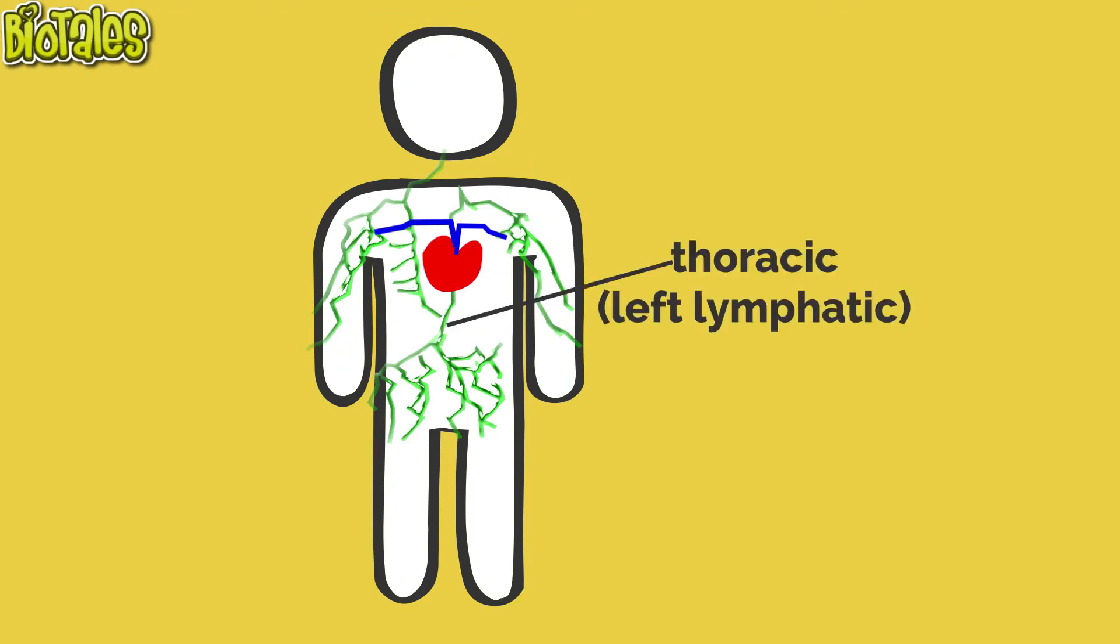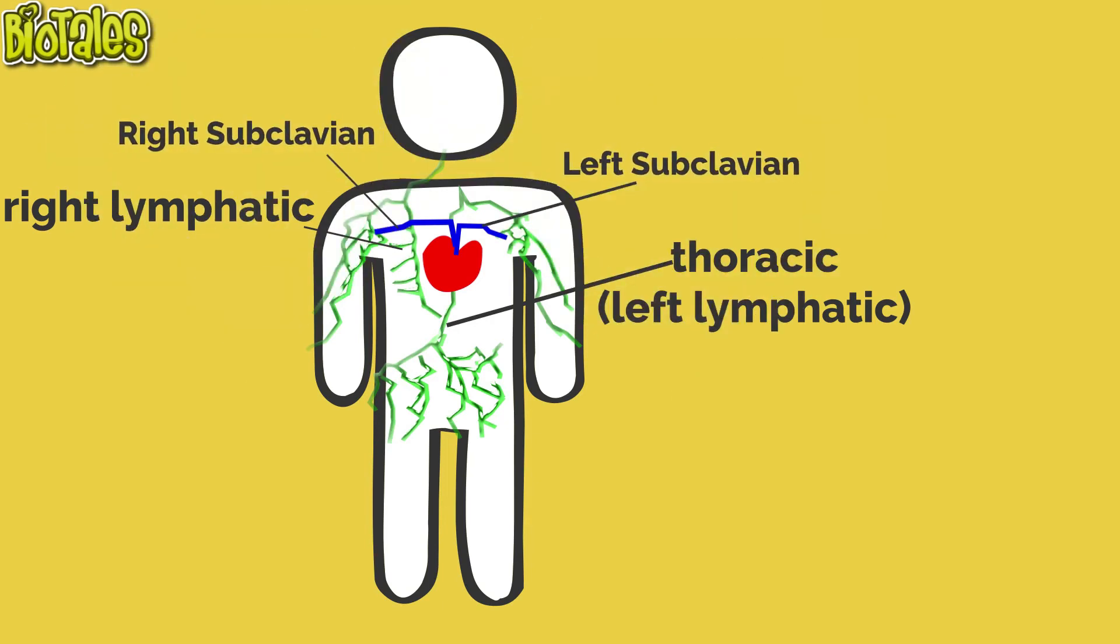All lymph at the end passes into the thoracic duct on the left side and right lymphatic duct, and then into their respective subclavian veins. In subclavian veins, this fluid is now called blood plasma.